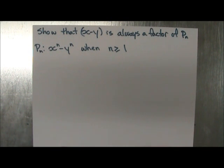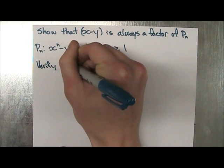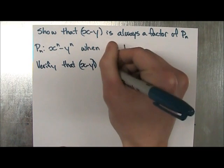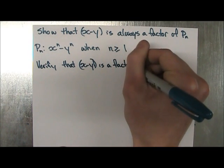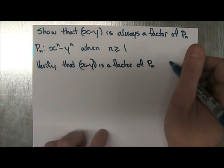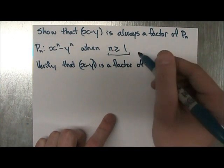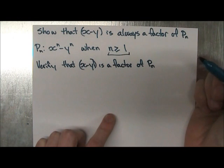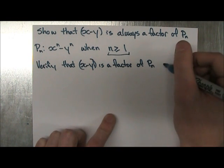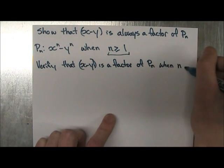So the first one is to verify that x minus y is a factor of P_n for a specific integer. So this is our restriction. So we're going to pick an integer that fits within that restriction, and 1 is fine for n.